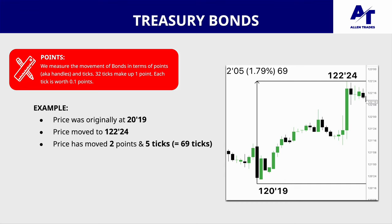Here's a bond example: price was originally at 120.19 and rallied up to 122.24. Everything to the left is points; everything to the right is ticks. So that's a move of 2 points and 5 ticks. Since 32 ticks make up a point, 2 points equals 64 ticks, plus an additional 5 ticks, giving us 69 ticks in total.